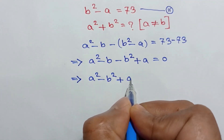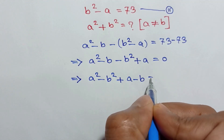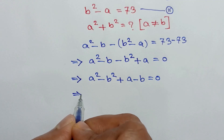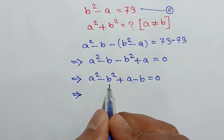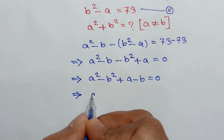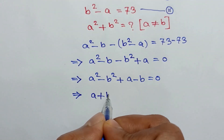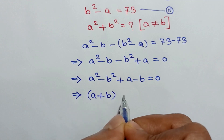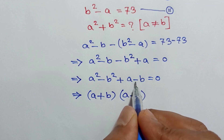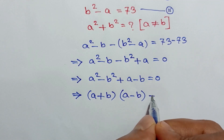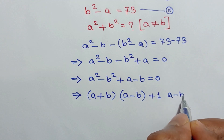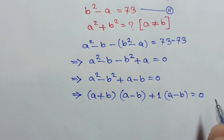Rearranging, we can write a² - b² + a - b = 0. Applying the formula a² - b² = (a + b)(a - b), we have (a + b)(a - b) + (a - b) = 0.